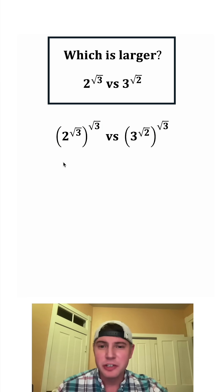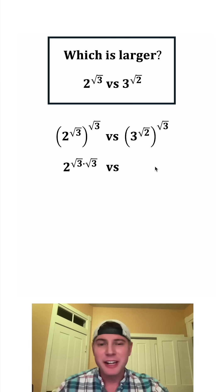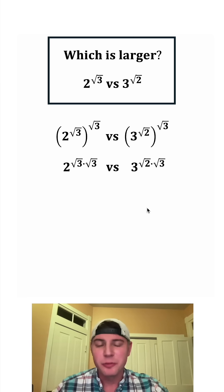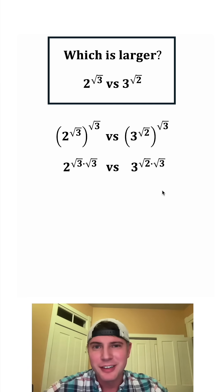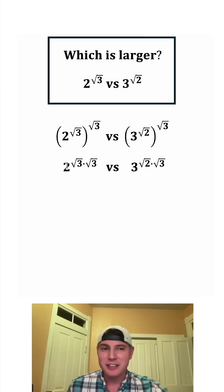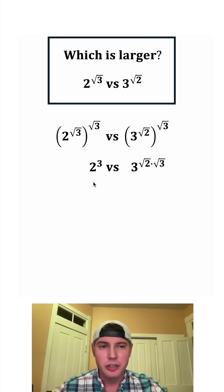On the left-hand side, it's going to be two to the power of square root of three times square root of three. Square root of three times square root of three is three, so this is going to be two cubed.